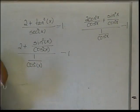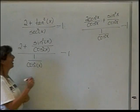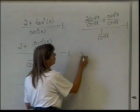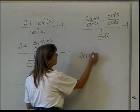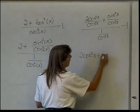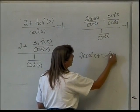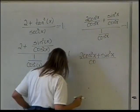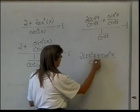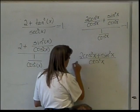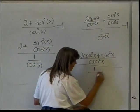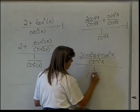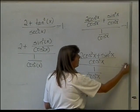Now, when I put the two fractions in my numerator together, I get 2 cosine squared of x plus sine squared of x divided by cosine squared of x. I still have 1 over 1 over cosine squared of x. Still minus 1. Now what?